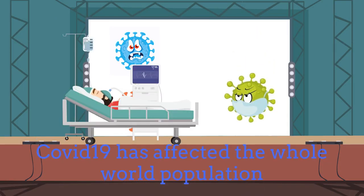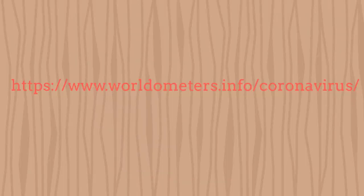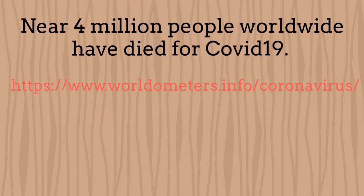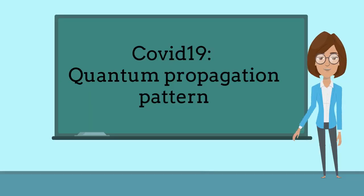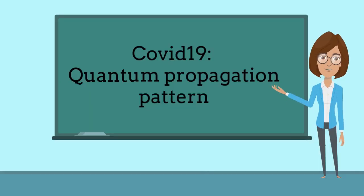The COVID-19 has affected the whole world. In agreement with the information of Worldometer, near 4 million people have died due to COVID-19. More than 183 million persons have been infected so far. The COVID-19 has a quantum propagation pattern.